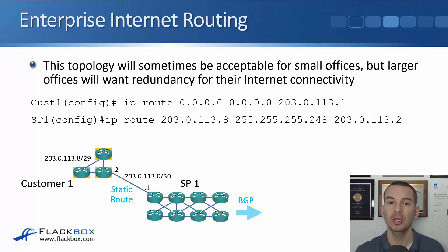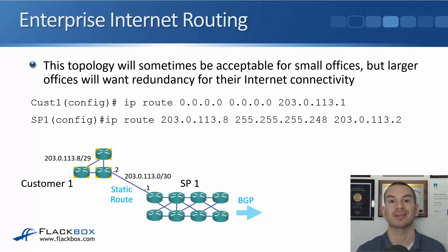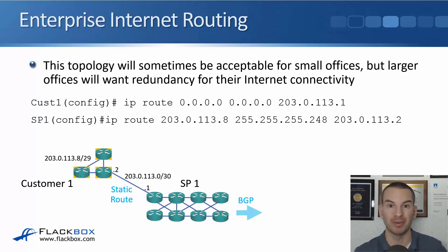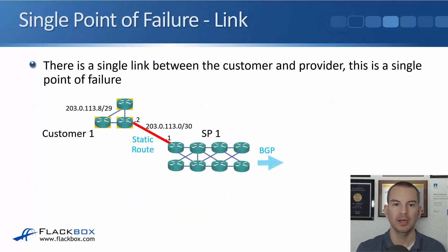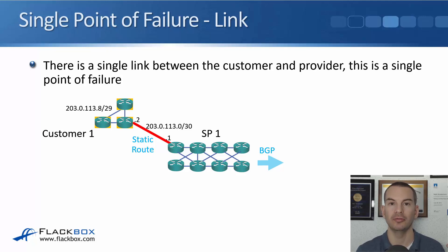That single-link topology is sometimes acceptable for small offices, but larger offices are probably going to want redundancy for their internet connectivity. They might have mission-critical services, need internet access for browsing, or have remote workers and remote offices VPNing in. For them, it's really important that the internet is always up. With a single link between the customer and provider, that single link is a single point of failure.